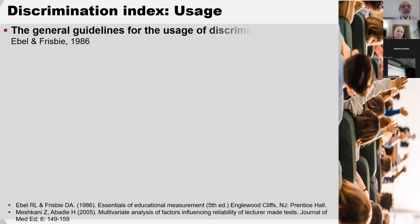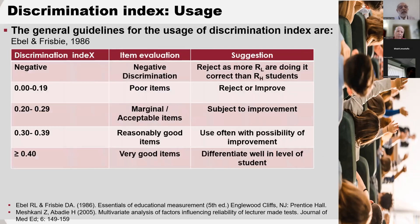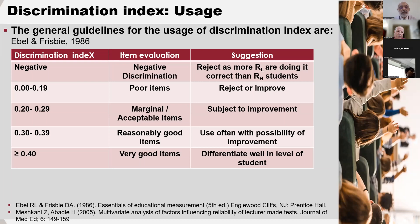How do we use the discrimination index? The general guidelines are: if the discrimination index is negative, that item should be rejected, as more lower group students are answering correctly. If it is up to 0.19, these are poor items and should either be rejected or improved. If it is 0.20 to 0.29, this is marginal — items are acceptable but still need some improvement. If it is up to 0.39, they are reasonably good. And if it is 0.40 and above, they are very good items.